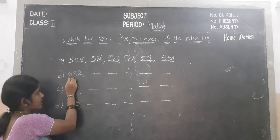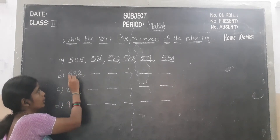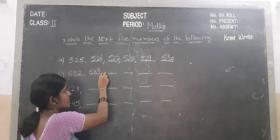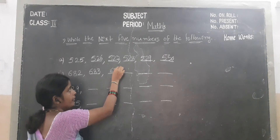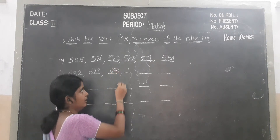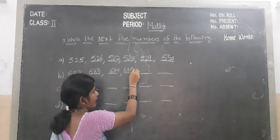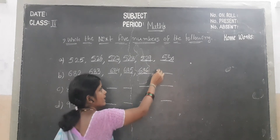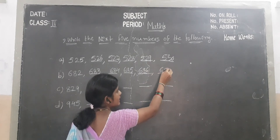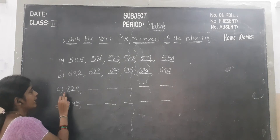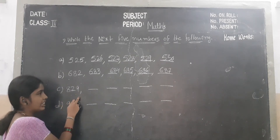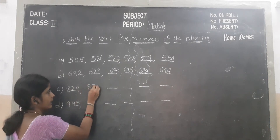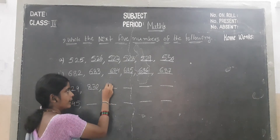Second sum children — 682. Which number will become? 683. Next number children? 684. Next number? 685. Next number? 686. Next number? 687.